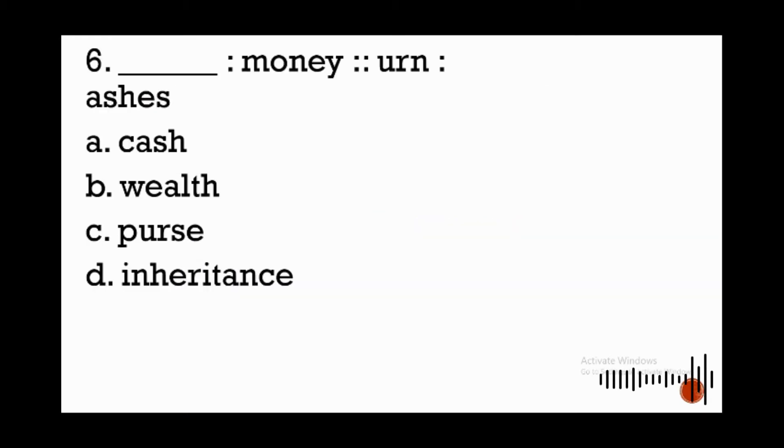Next, number six: blank is to money as urn is to ashes, just like what we did in number five. Urn is used to hold ashes. Now what do we use to hold money?